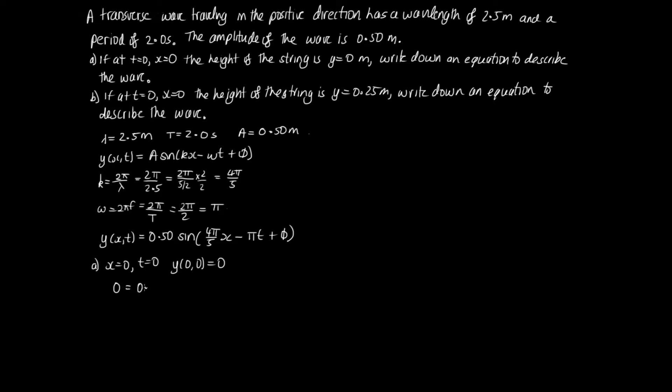So substituting in, we've got 0 is equal to 0.50 sin, this is 0 minus 0 plus phi. So that was just substituting these values into this line here. And so we've got 0 is equal to 0.50 sin phi. So sin phi.